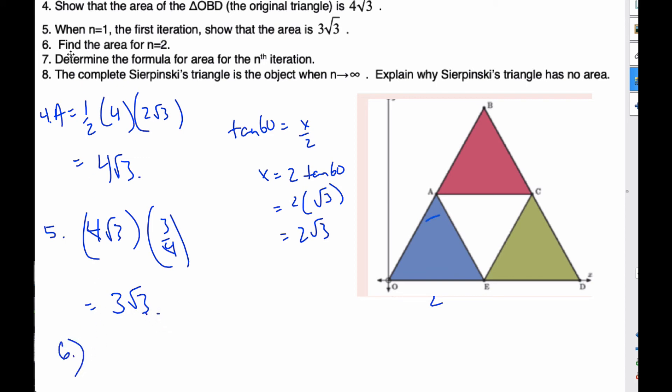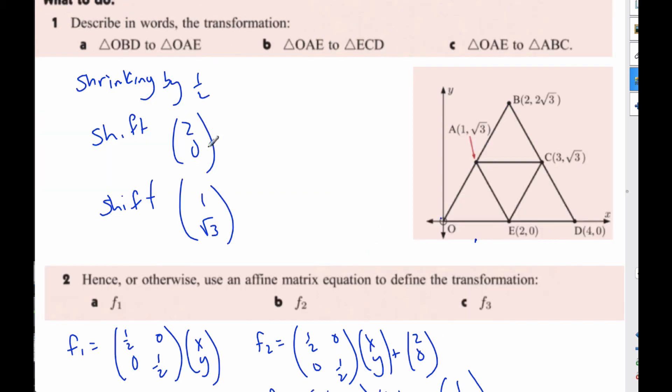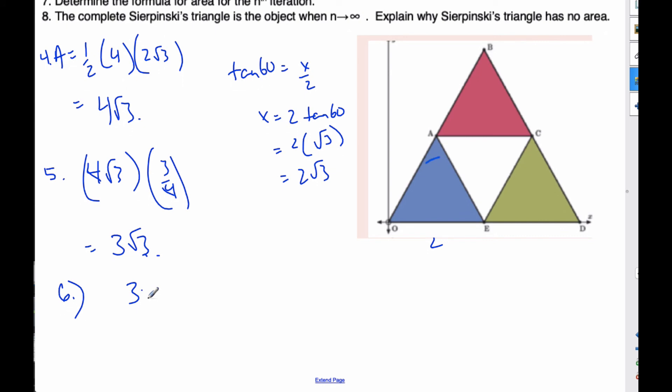The next thing to consider: find the area for n = 2. Well, we're going to shrink it down again. If we shrink it down again to this scenario, each of these triangles is three-quarters of what it was. So I can take my area that I have, 3√3, which is the area of this one, and multiply it by three-quarters, which will give me 9/4 √3.